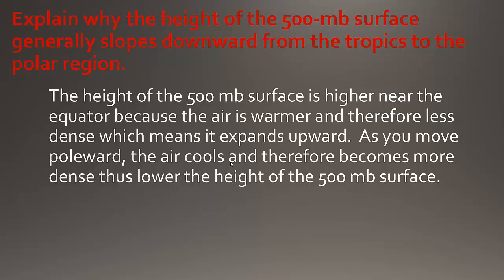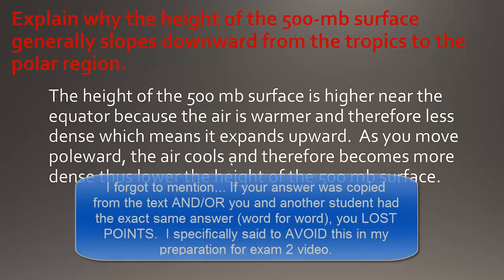Finally: explain why the height of the 500 millibar surface generally slopes downward from the tropics to the polar region. The height of the 500 millibar surface is higher near the equator because the air is warmer and therefore less dense, which means it expands upward. As you move poleward, the air cools and therefore becomes more dense, thus lowering the height of the 500 millibar surface. Something along those lines in a coherently stated short answer was what I was looking for.